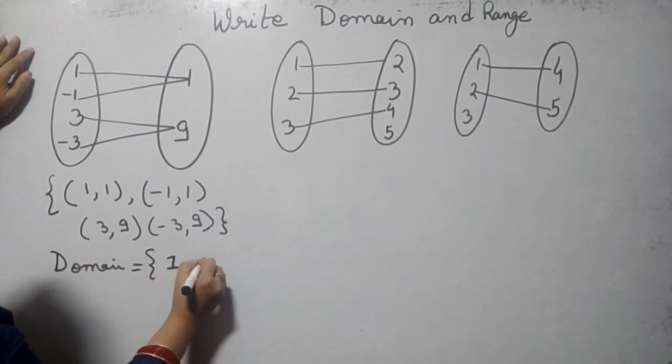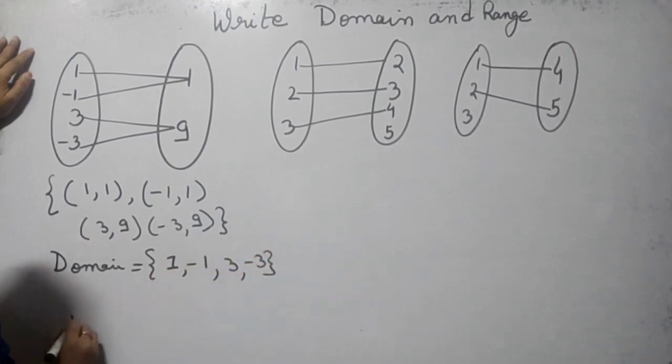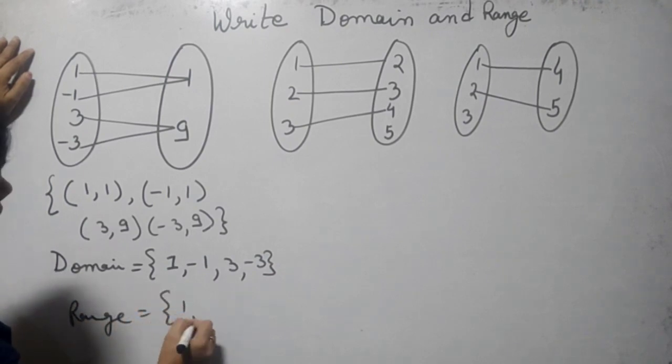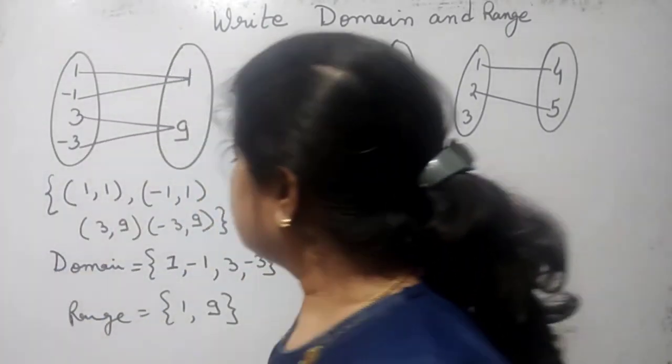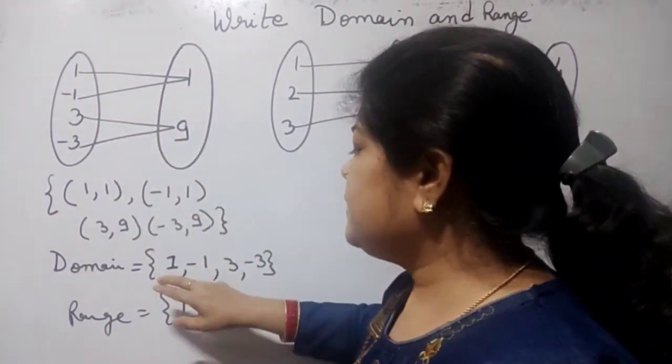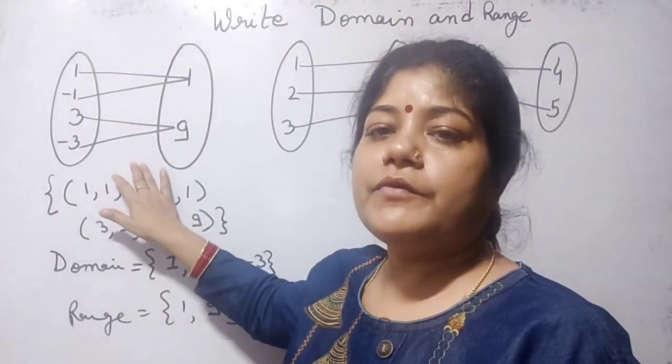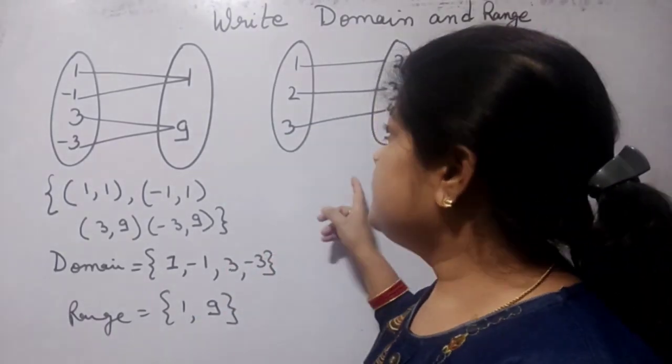1, minus 1, 3, minus 3. Now range: 1 and 9. Here we observe that all of the elements 1, minus 1, 3, and minus 3 become the domain of the set, so this is the function.